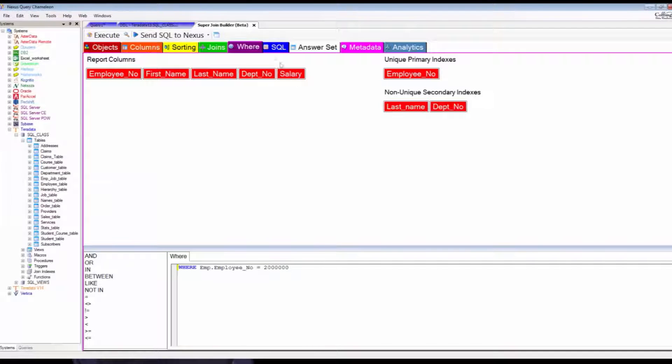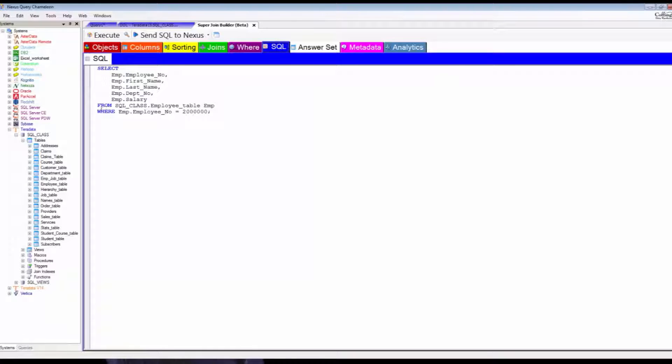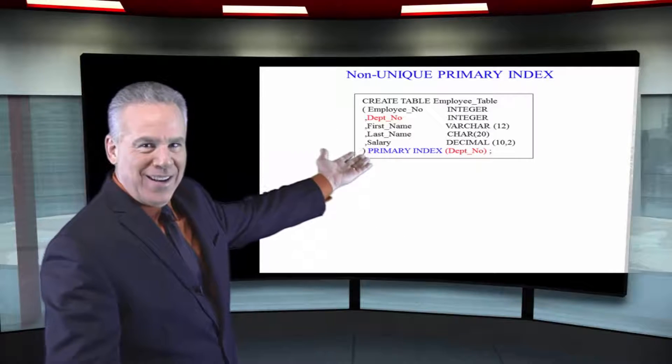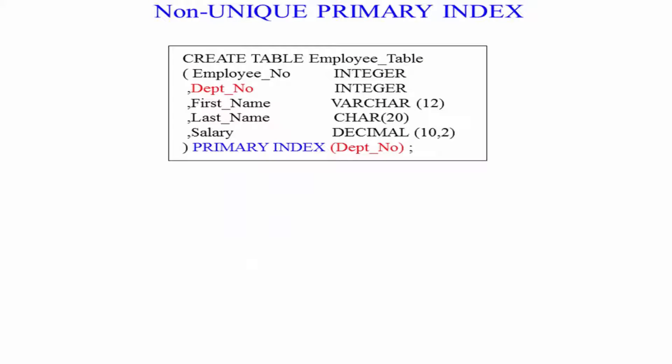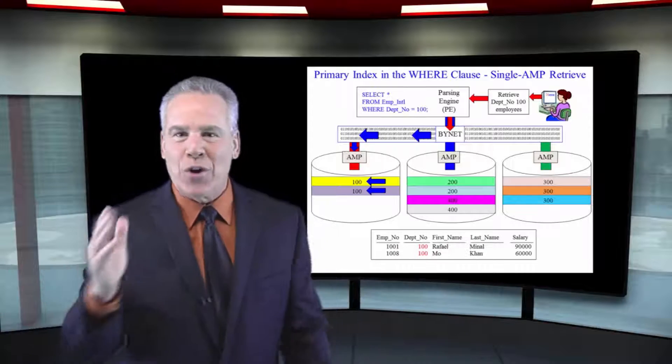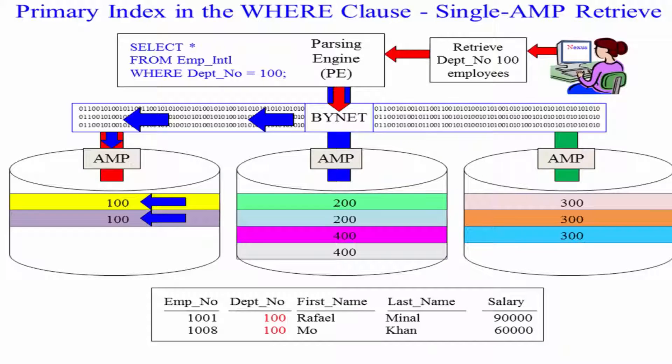Single amp retrieve when you use that in the WHERE clause. Our next example is the non-unique primary index. It just doesn't say unique, so it's always a non-unique primary index. It's going to spread the data non-evenly, because all like values for that department number are going to the same amp.